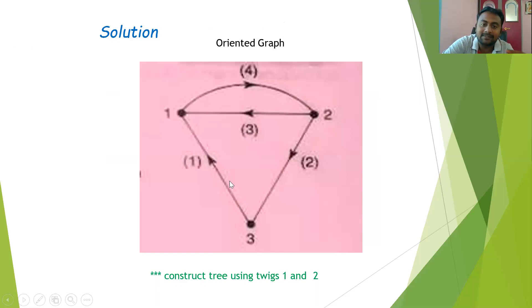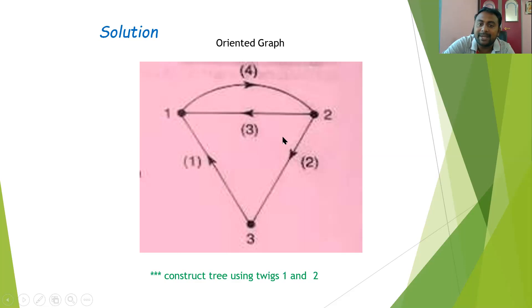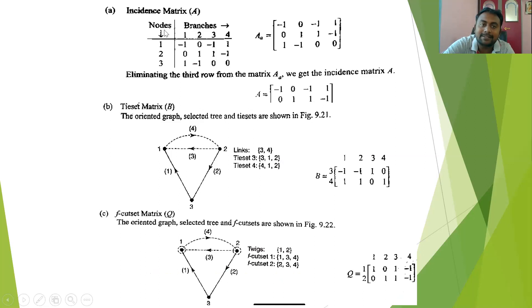To write matrix A we need only the oriented graph. To write the tie-set matrix and cut-set matrix we need the trees. The number of twigs equals n minus one; with three nodes, three minus one gives us two twigs. The remaining two branches are the links. In this problem, branches one and two are the twigs and branches three and four are the links.